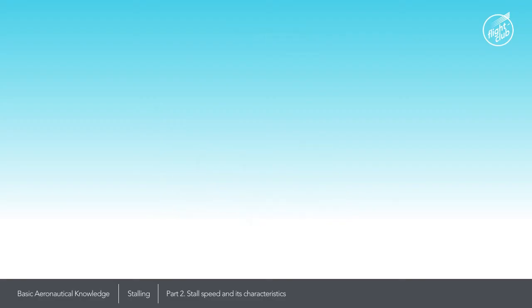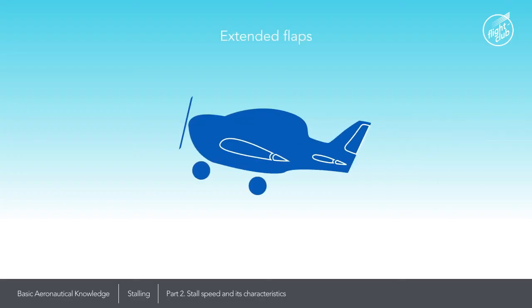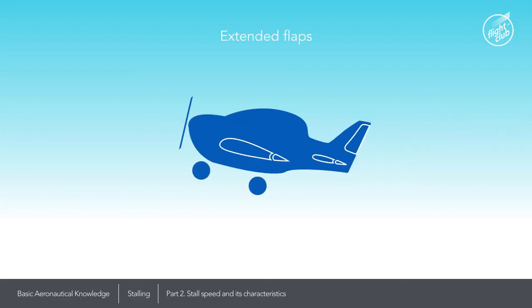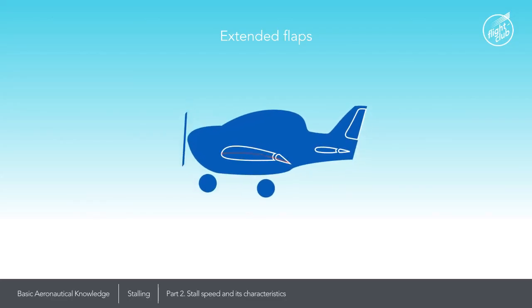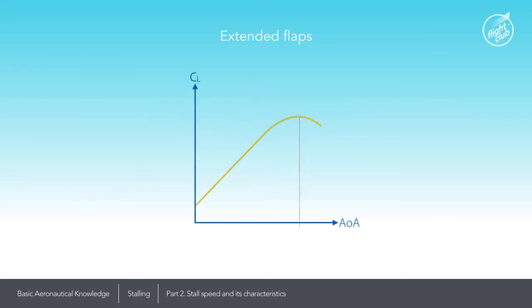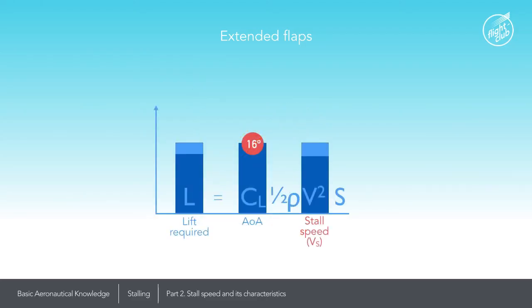Extended flaps. Extended flaps increase the camber of the wings, lower the nose and generate more lift. This is what happens to the coefficient of lift versus angle of attack curve when flaps are extended. Greater ability to generate lift means that the stalling speed will reduce, but the aircraft will stall at a smaller angle of attack.